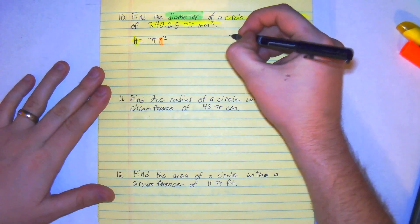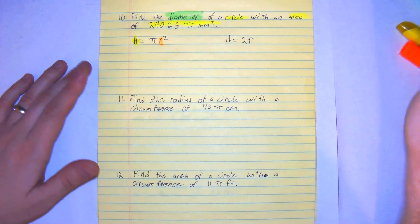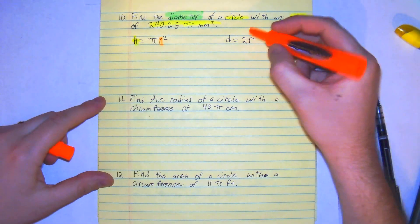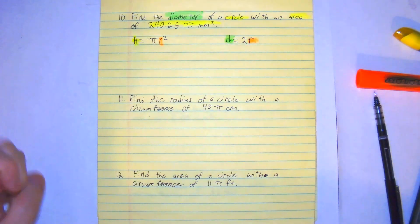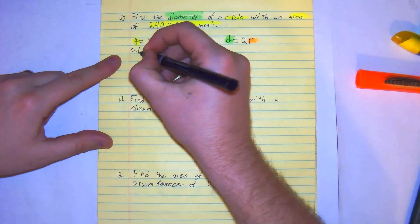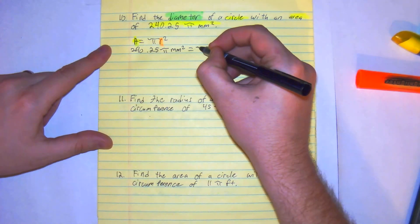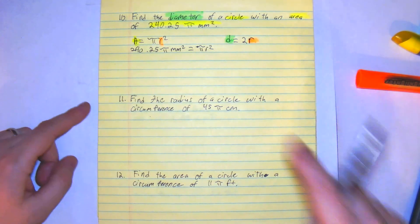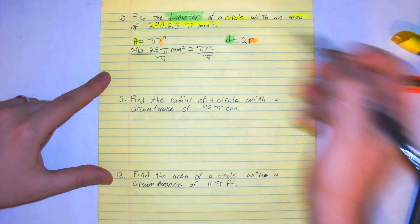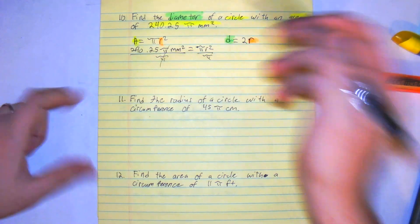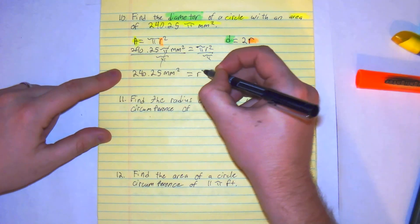We need to find the diameter, and diameter is equal to 2r. We'll be able to get our diameter once we get our radius. So we write: 240.25 pi millimeters squared equals pi r squared. The first thing we're going to do is divide by pi. Pi divided by pi cancels out, so now we're left with 240.25 millimeters squared equals r squared.